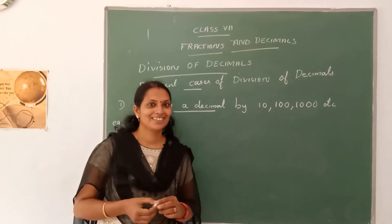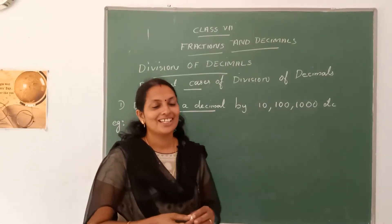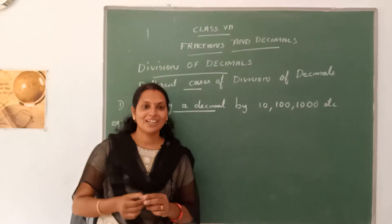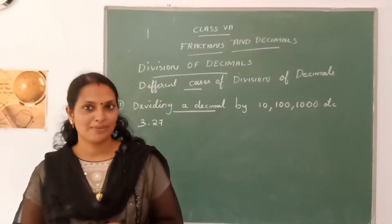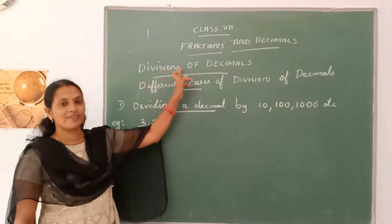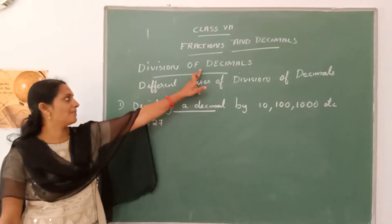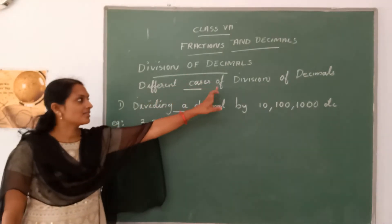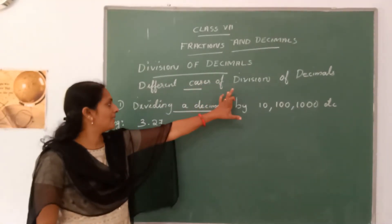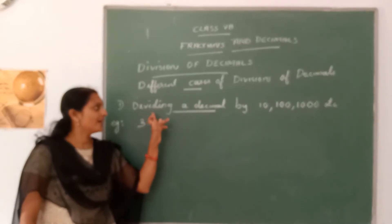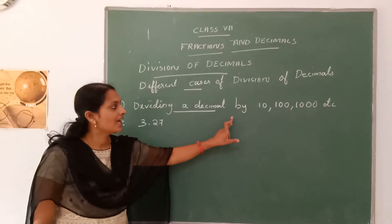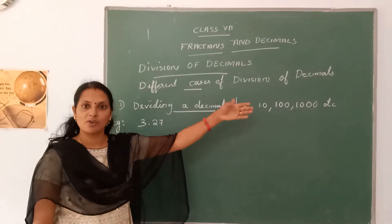Good morning all. The last class we learned about multiplication of decimals. Today we will discuss about division of decimals — different cases of division of decimals. The first case is dividing a decimal by 10, 100, 1000, and so on.